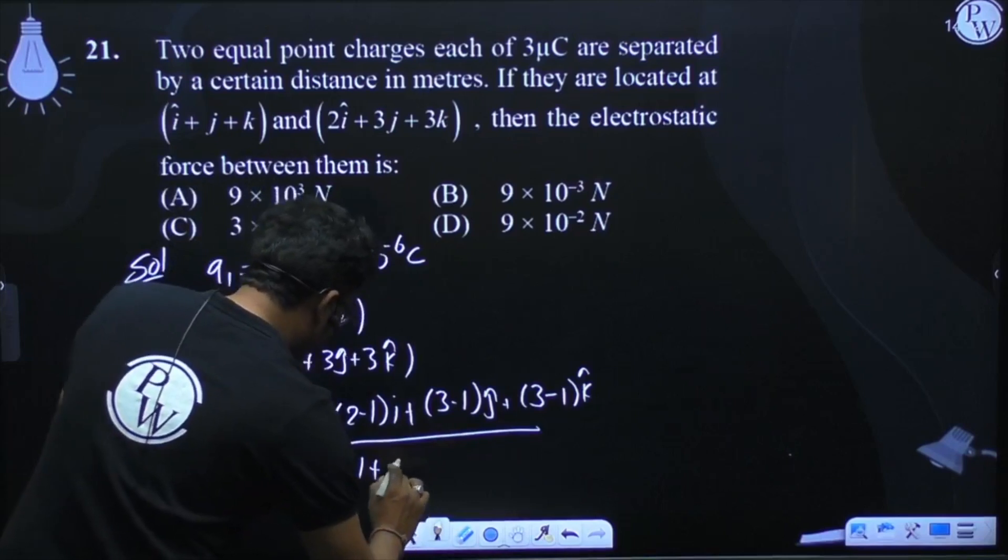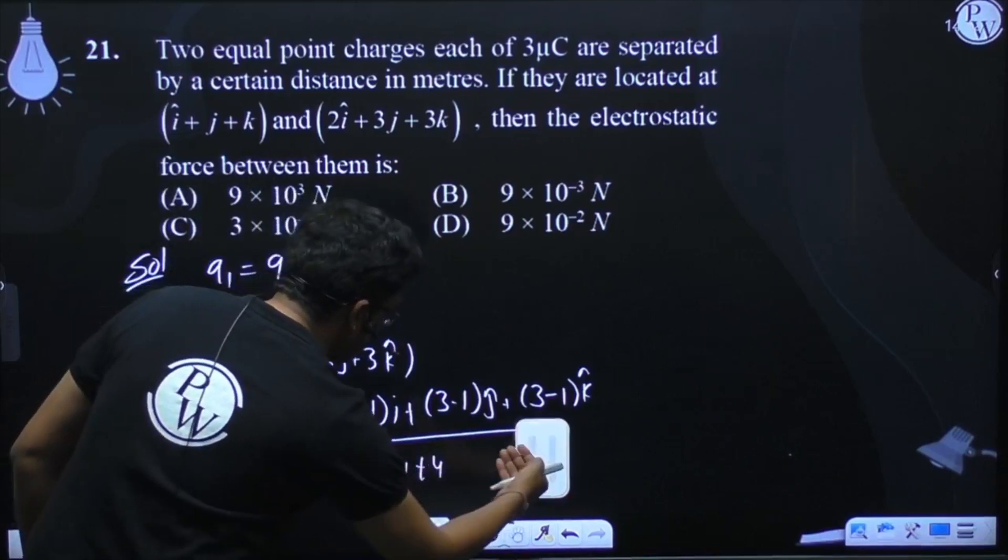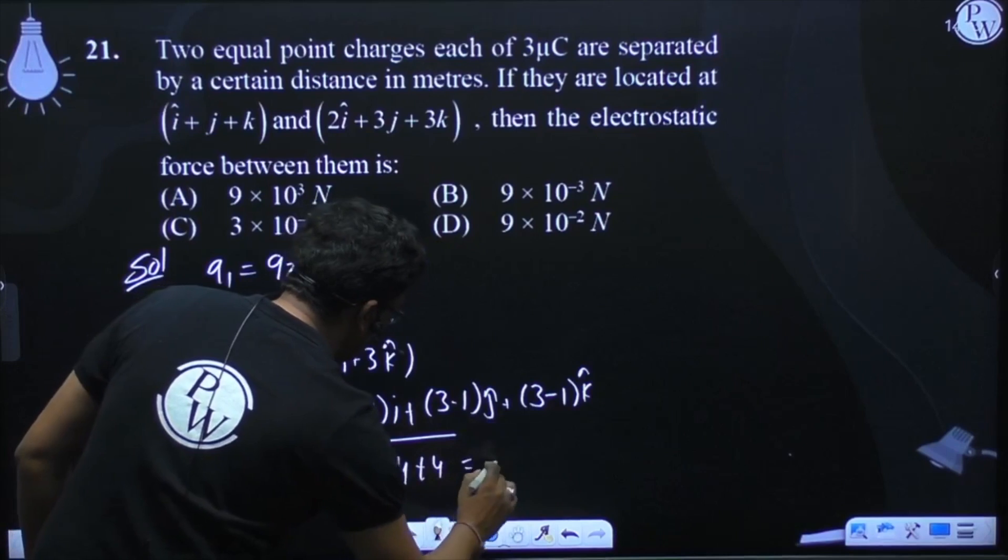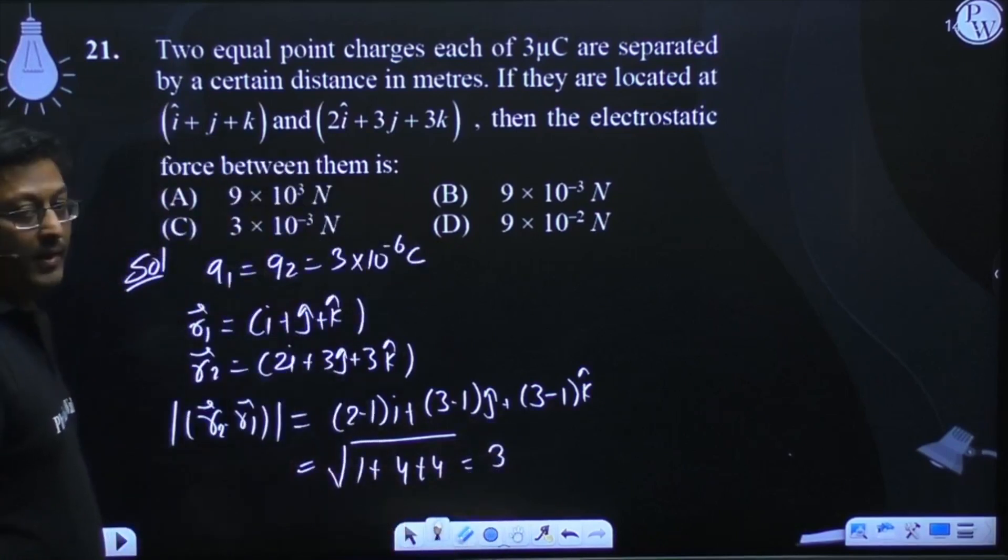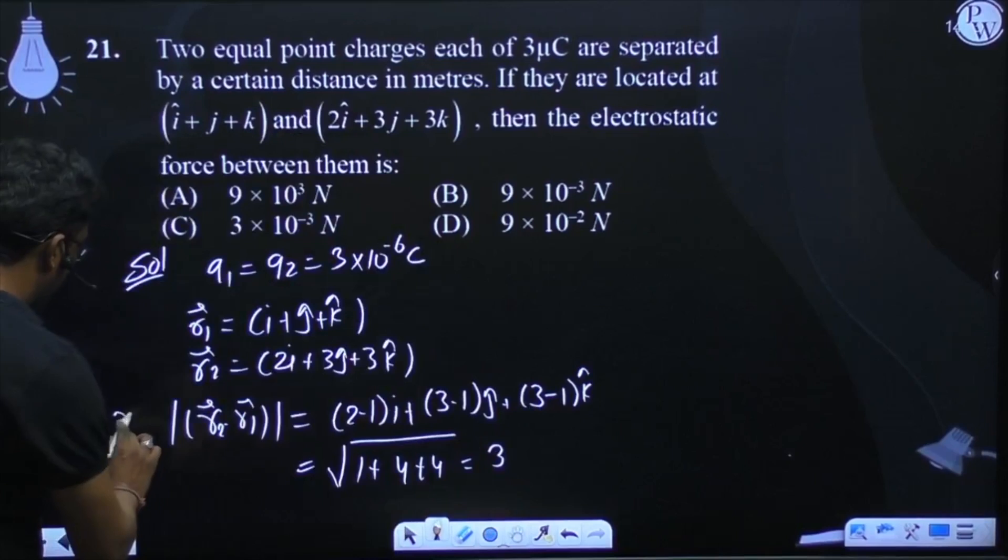it's 1 plus 4 plus 4, that is your 3. So the magnitude comes out to be 3, which we call r.